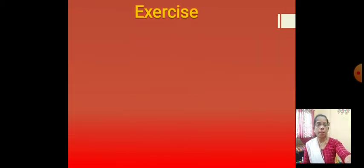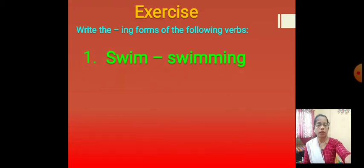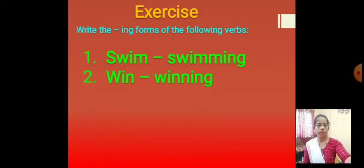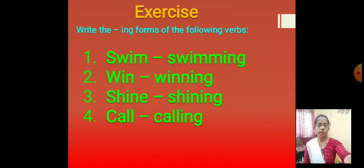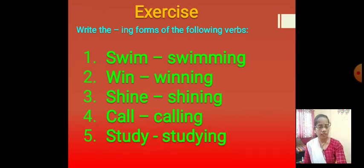Let's see more examples as an exercise: write the ING form of the following verbs. Swim — swimming. Win — winning. Shine — shining. Call — calling. Study — studying. These are the kinds of ING forms when we have to add ING to a verb and join them together.